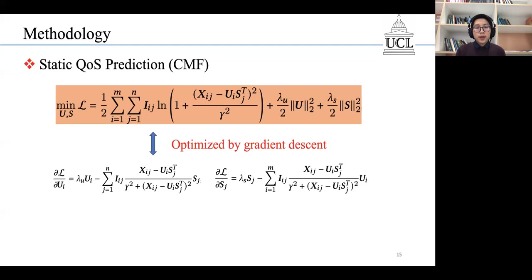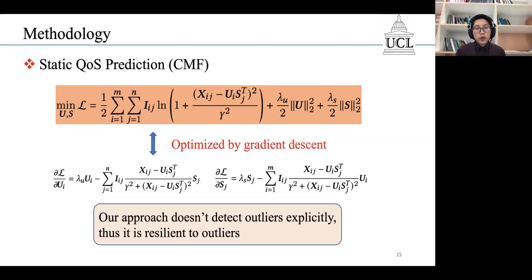It is pretty simple, so we can use gradient descent to optimize it. Note that in this approach, we don't detect outliers explicitly, so we can say that our approach is resilient to outliers.